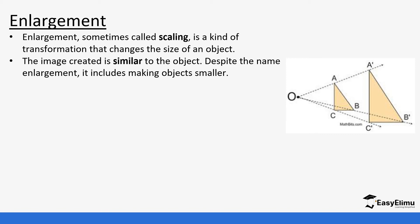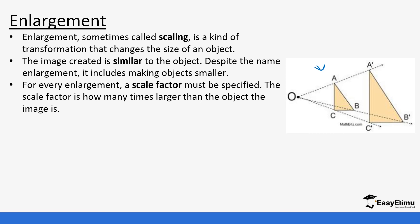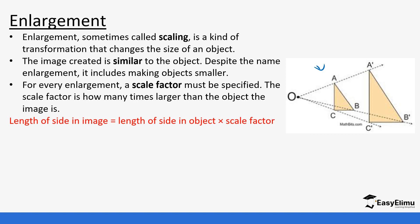From the image given, triangle ABC is the object and it has been enlarged to give image A', B', C'. For every enlargement a scale factor must be specified. The scale factor is how many times larger the image is than the object. The length of the side of the image equals the length of the side of the object times the scale factor. So if you want to get A'B', you take AB and multiply by the scale factor.